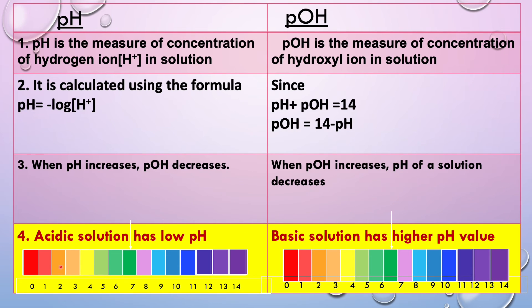Here is the pH scale, which helps to know about the pH of a solution. Acidic solutions always have a very low pH, while basic solutions have a higher pH value.